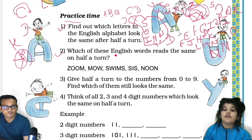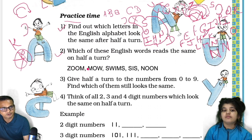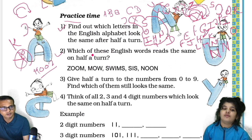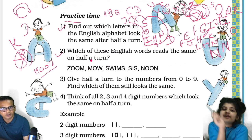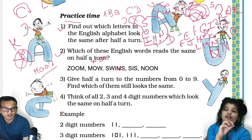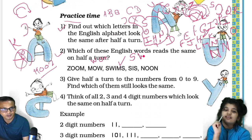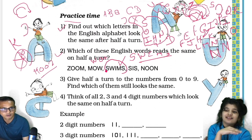Now at this point: which of these English words reads the same on half a turn? Half a turn means this side comes this side and that side comes the start. It will be as if you're reading from the back side — you turn it over and check if it reads the same. 'As' — AS will be the same. 'Sis' would be the same but 'sister' would not.